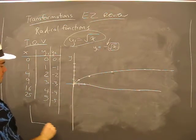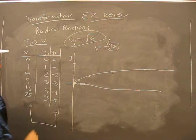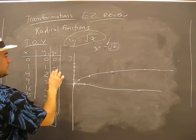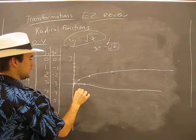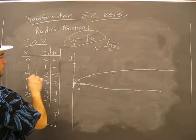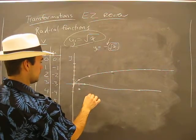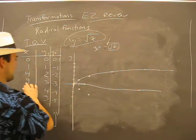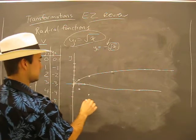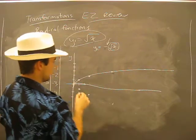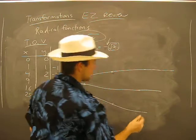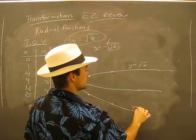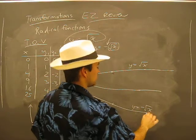For our second y function and what that looks like on a graph, all we did was stick a negative sign in front of the radical. Now if we plot our x's with our y2 column, we have 0 and 0, 1 and negative 1, 4 and negative 2. It's kind of looking similar. 9 and negative 3 for y, so there's negative 3, 9. What you'll see is that here we have y equals root x and this is y equals negative root x.